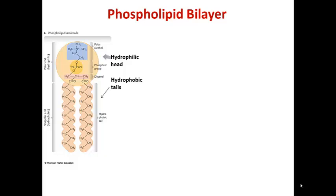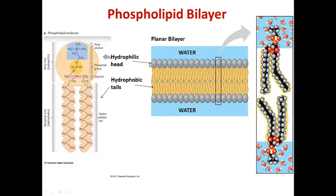Let's talk about the phospholipid bilayer. Phospholipids are amphipathic molecules that have a hydrophilic head group and two hydrophobic tails. The amphipathic nature of those molecules allows them to form a bilayer because the hydrophilic heads can associate with water both inside and outside the cell, whereas the hydrophobic tails are tucked into the interior of the bilayer, facing one another and protected from the water. It's the amphipathic nature of the phospholipid that drives formation of the bilayer structure.